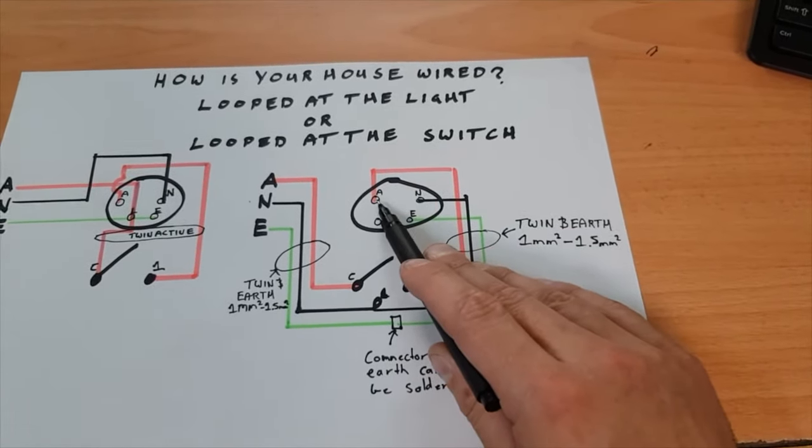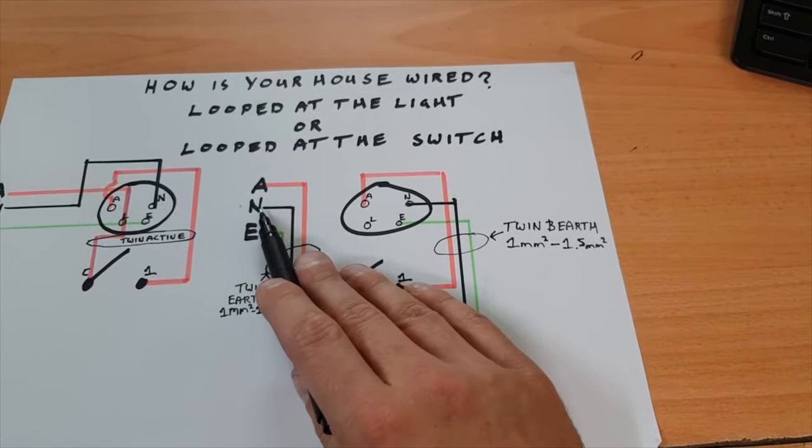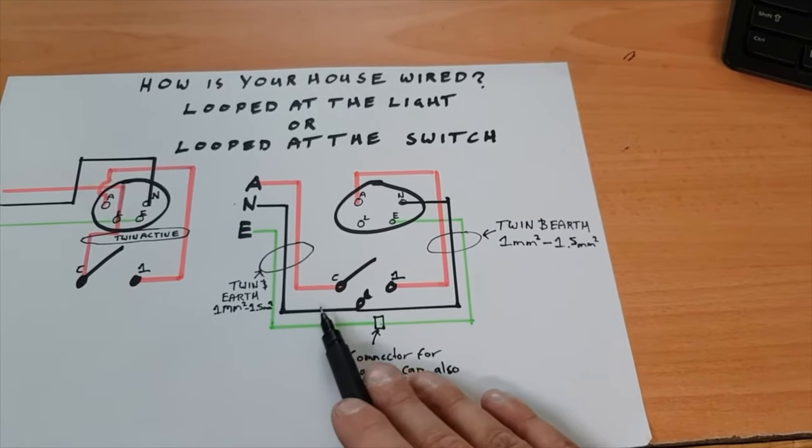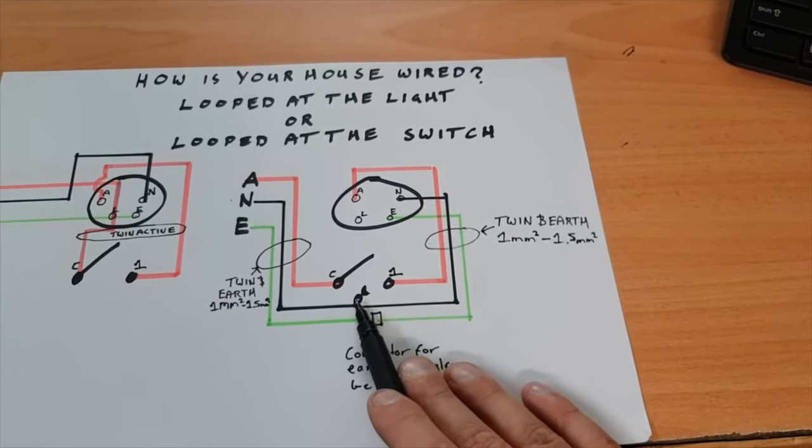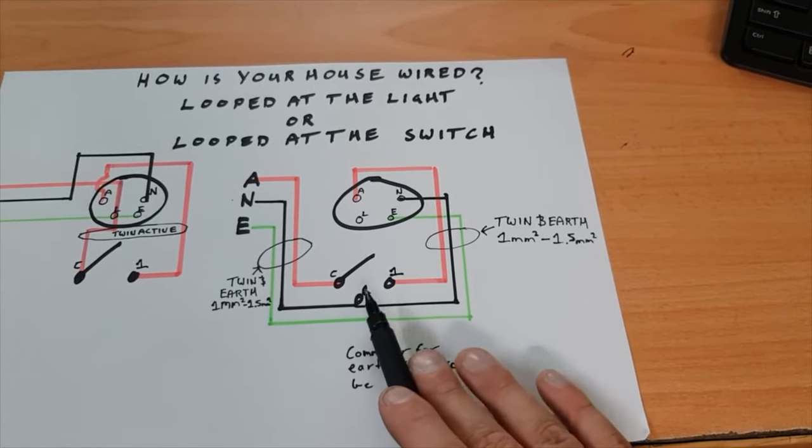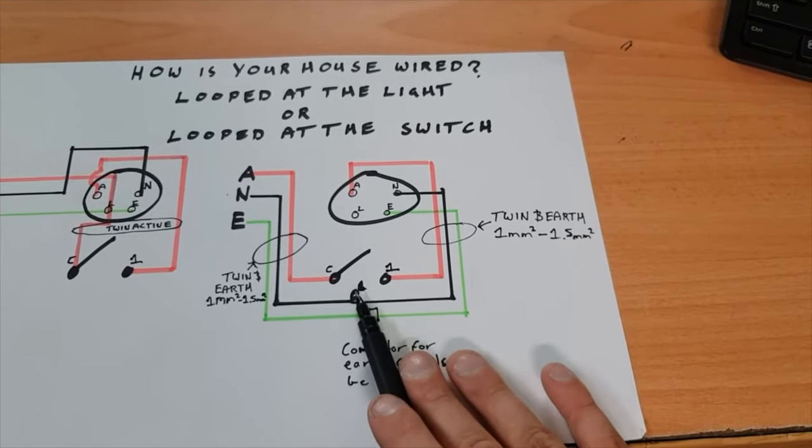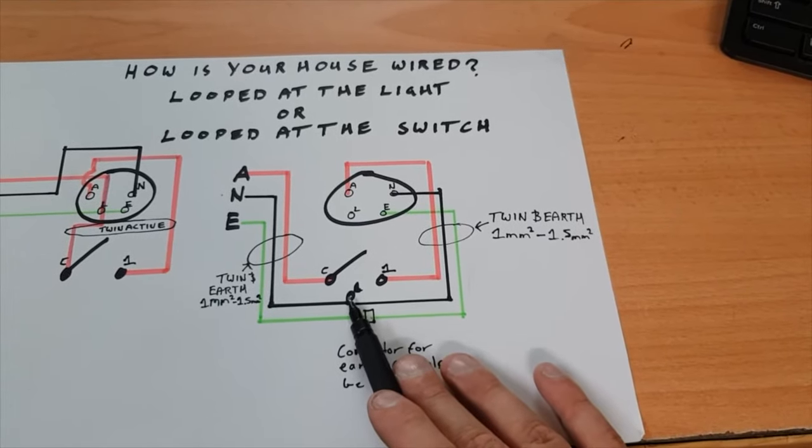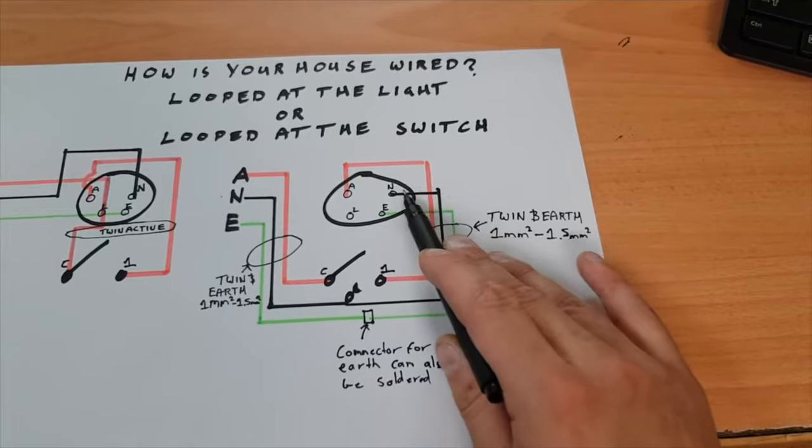And then your neutral goes straight from your neutral of your switchboard circuit breaker down here to your looping terminal, and it'll go into there, into your looping terminal or connector depending on how many other neutrals you have. It might be a bit squeezy to fit them all in this terminal, so you can use a connector. So from your looping terminal at your switch with your neutrals in it, goes up to your light neutral.